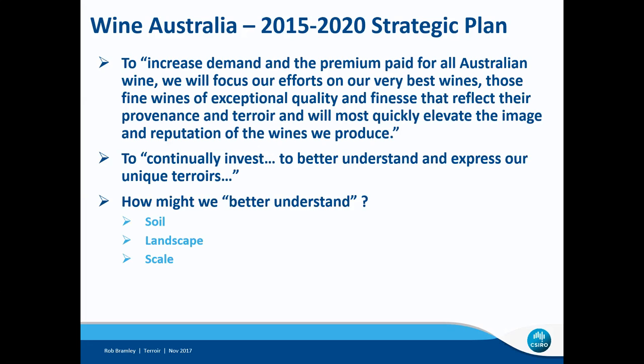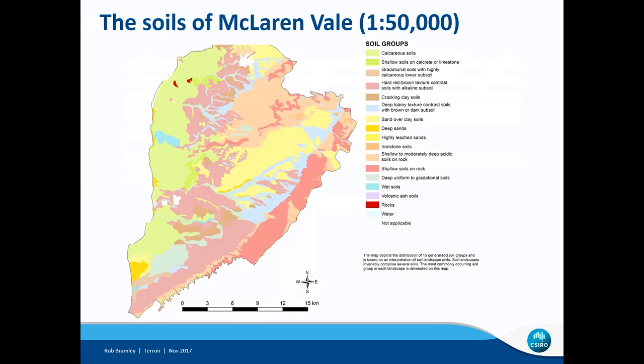My question very simply is: how might we better understand terroir? I'm going to focus particularly on soil and landscape and the importance of scale in thinking about those things, recognising that other factors, particularly things like climate, are also important. So let's start by looking at the soils of McLaren Vale.